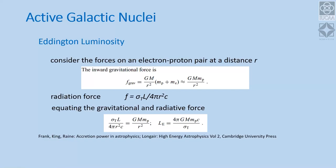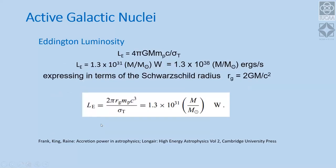When you equate the gravitational force to the radiation force — where Thompson scattering plays a role and the number of photons is governed by the luminosity — the r² terms cancel out and you find that the maximum luminosity (the Eddington luminosity) depends only on the mass of the object. For a supermassive black hole of about 10^8 solar masses, you could get a luminosity of about 1.3 × 10^46 ergs per second — in the ballpark of the luminosities we talked about.